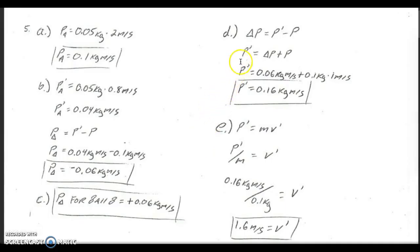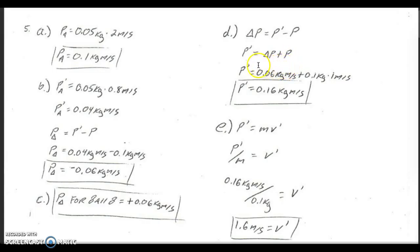For part D, what is the momentum of ball B after the collision? We know the change in momentum for ball B was 0.06 kilogram meters per second. We know that the momentum before is given by its mass, 0.1 kilograms, times its speed of 1 meter per second. So momentum after equals the change plus however much it had at the beginning. It had 0.1 kilogram meters per second to start and gained 0.06, so the momentum after the collision is 0.16 kilogram meters per second.